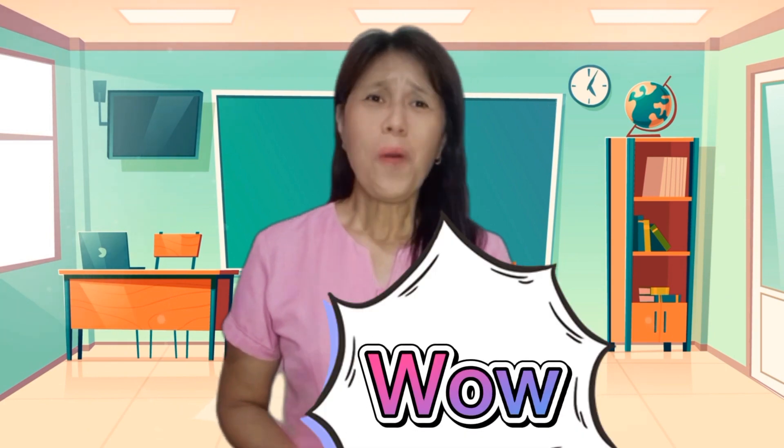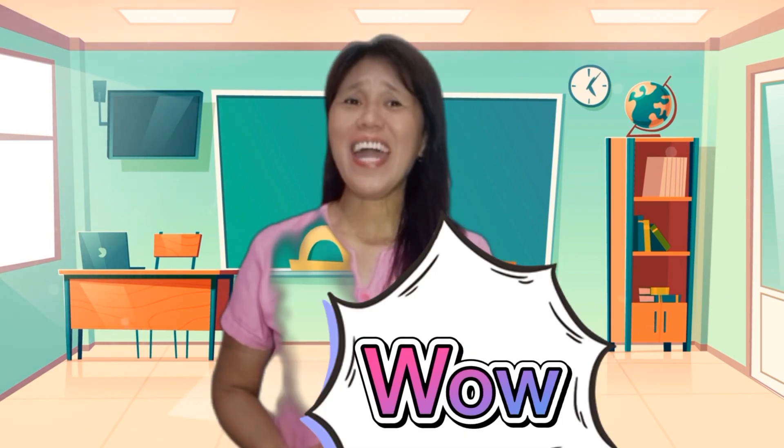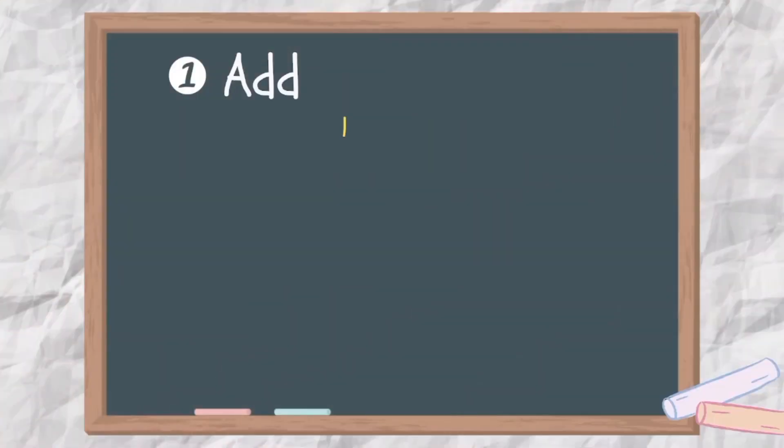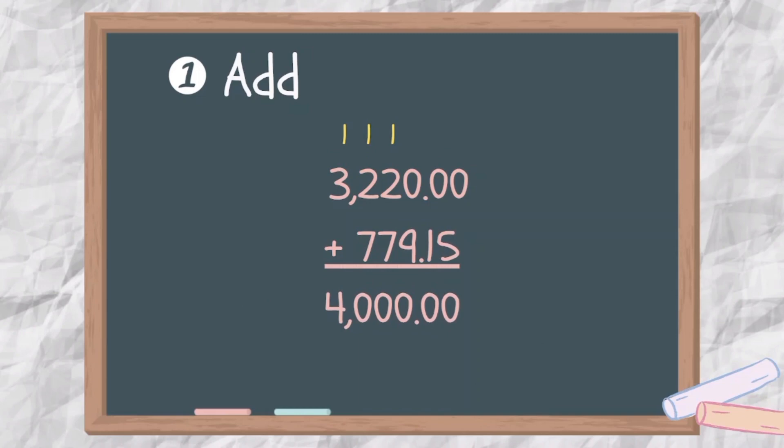Do we have the same answer? Wow! I'm amazed you got it! Now, how do we check? Add 3,220 pesos and 85 centavos and 779 pesos and 15 centavos. The sum is 4,000 pesos. So your answer is correct.